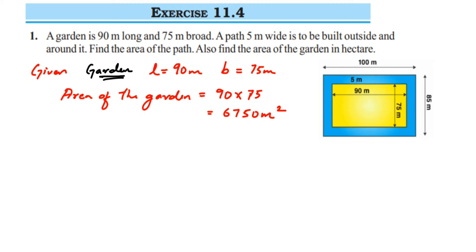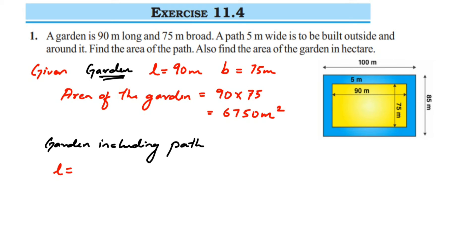We have already found the length and breadth. Now for the garden including path, the length and breadth are different. The length becomes 100 meters and the breadth is equal to 85 meters, as I explained.